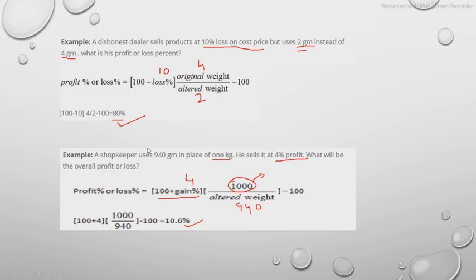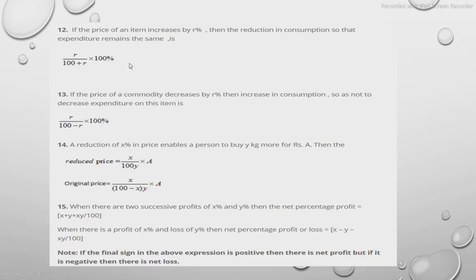There are some other tricks for complicated problems. If the price of an item increases by r percent, the reduction in consumption so that expenditure remains the same is given by: r / (100 + r) × 100 percent. For example, if the price of sugar increases by 10%, you can directly apply this formula to find how much consumption should be reduced.